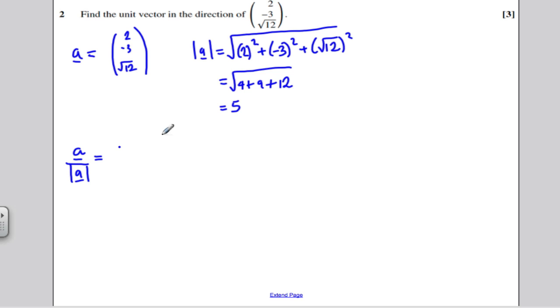So that's that whole vector divided by 5, so a fifth multiplied by the vector 2 minus 3 root 12. That would be absolutely suitable as your answer for that.